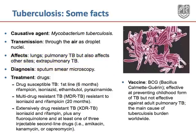TB itself can be divided into three categories. Drug-susceptible TB, which is curable by the mainline drugs rifampicin and isoniazid, and treatment lasts about six months.